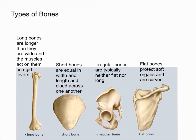Next, we're going to talk about irregular bones. Irregular bones are typically neither long nor flat. An example would be your vertebrae, which are considered irregular, as well as your hip. Irregular bones are shapes that essentially do not have a standard shape.